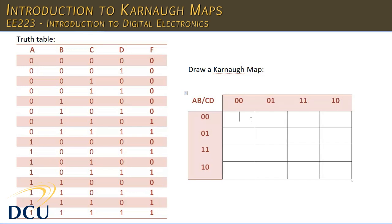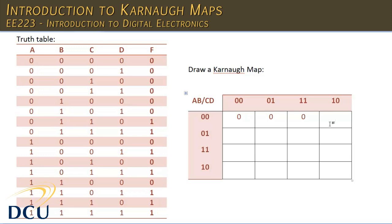Now what we want to do is populate the cells. We look down our truth table and see: if AB is 0,0 and CD is 0,0, what is the output F? We see 0,0,0,0 gives us an output of 0. We continue: 0,0,0,1 gives an output of 0; 0,0,1,1 gives an output of 0. We continue filling in the Karnaugh map from the truth table values.